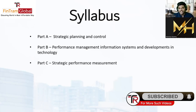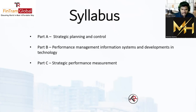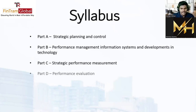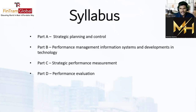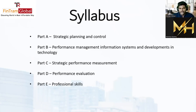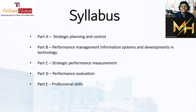In Part C, we have Strategic Performance Measurement — measuring the performance of an organization, identifying areas of improvement, and what strategies can be implemented to improve. In Part D, we learn about Performance Evaluation: how to evaluate performance using certain measures, ratios, and matrices such as the Balanced Scorecard, the Performance Pyramid, and several others. Then we have Part E, which is Professional Skills, tested from the September 2022 exam sitting onwards. There's nothing theoretical to learn here; it's just a skill you need to have.